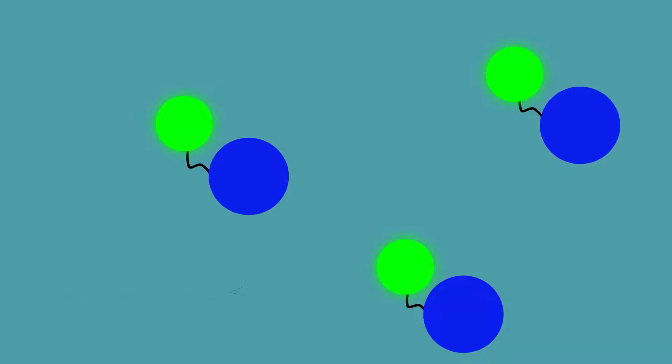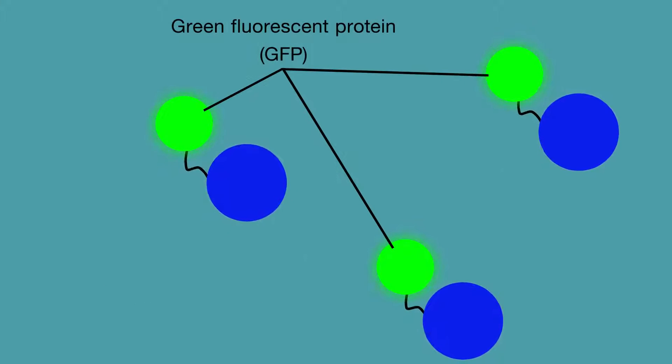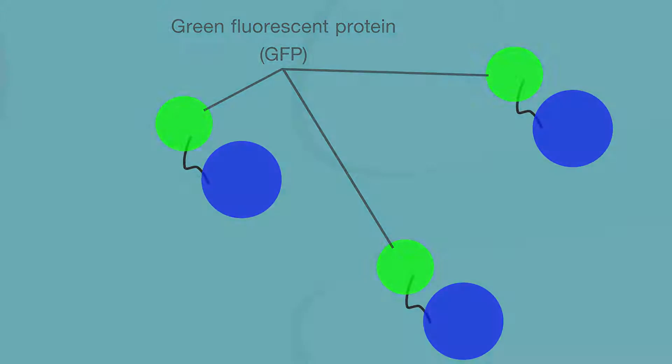Until now, scientists have been limited to using just one color when tracking signaling molecules in neurons. Green fluorescent protein, or GFP, is a good workhorse, but it's been difficult to find other colors that can work with it.